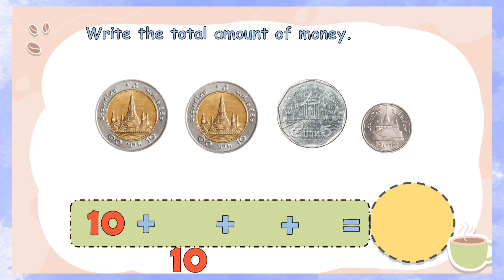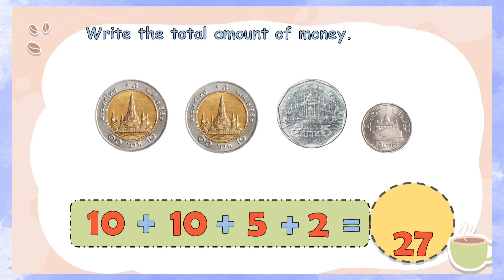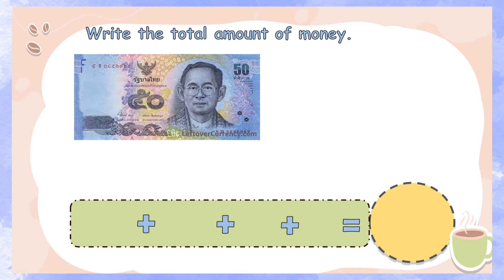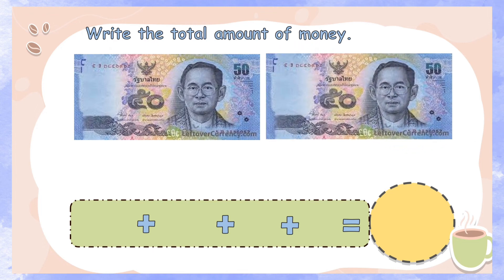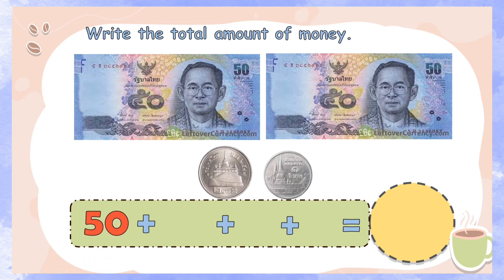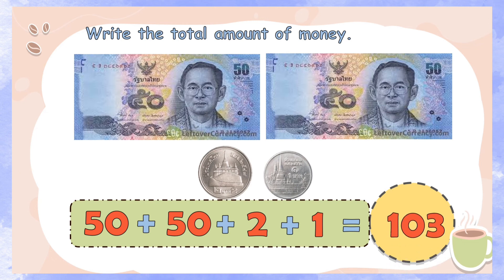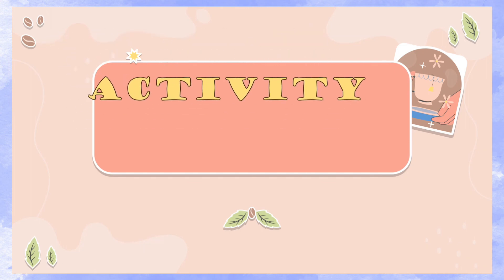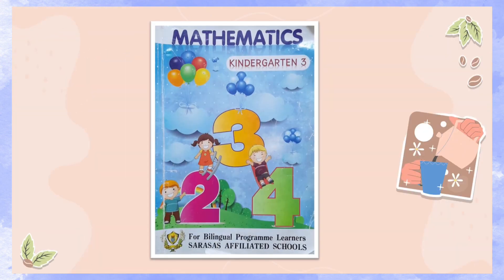10 baht plus 10 baht plus 5 baht plus 2 baht is equal to 27 baht. Another example: 50 baht plus 50 baht plus 2 baht plus 1 baht is equal to 103 baht.